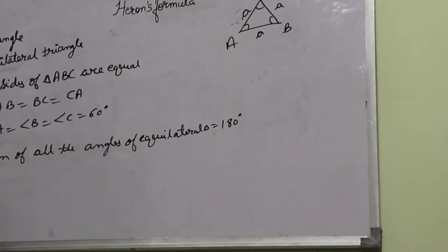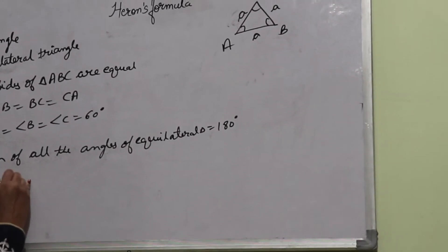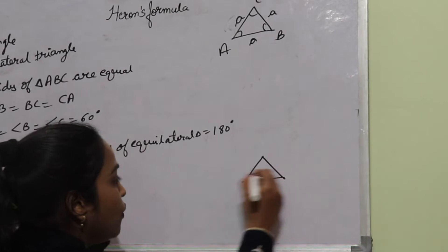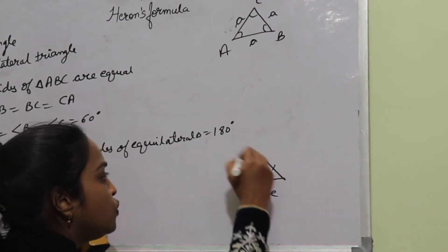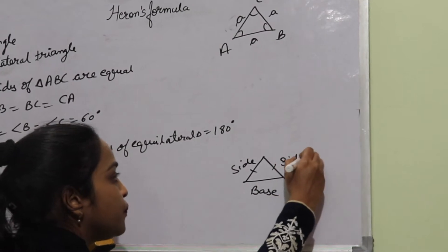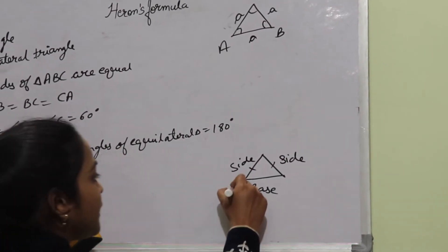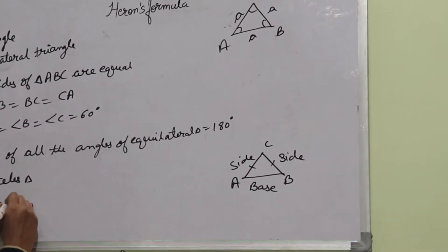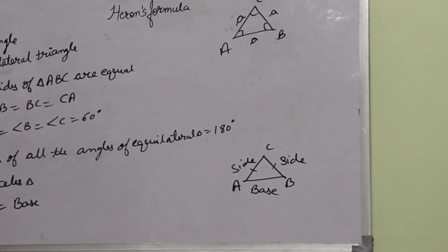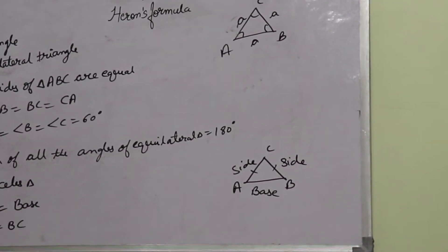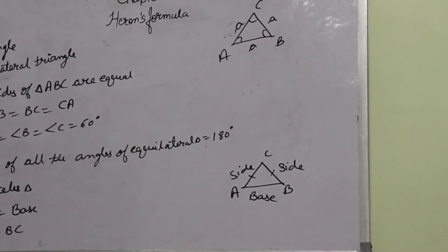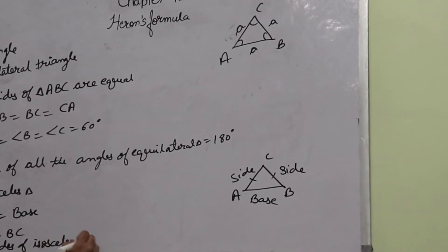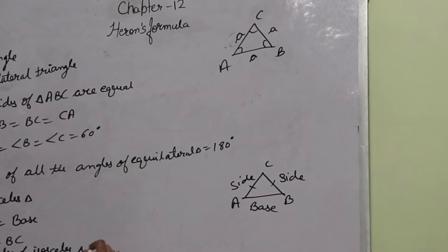Now we will discuss the isosceles triangle. In an isosceles triangle, we have a base and two sides — side 1 and side 2. This is triangle ABC, in which AB is the base and AC is equal to BC. That means two sides of the isosceles triangle are equal.